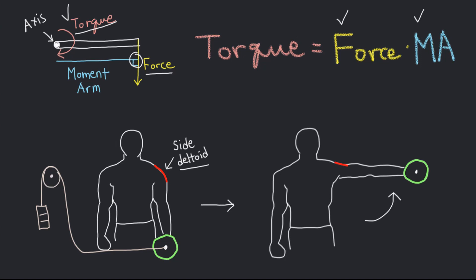One solution is using a cable. Using a cable maximizes the shoulder joint torque at the starting position, since the moment arm is at its longest, and the torque gradually decreases as your muscles shorten.